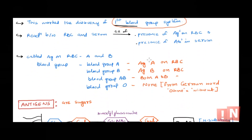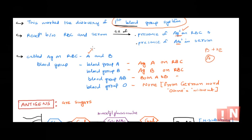What he observed was that when two individuals' blood was mixed, there was a reaction because of certain antigens present on blood cells and certain antibodies present in the serum. For example, if I am blood group B positive, I will have antibody against blood group A. That agglutination is due to the presence of antigens on RBC and antibodies in serum. He observed two antigens, and since they were the first discovered, they were simply named antigen A and antigen B.